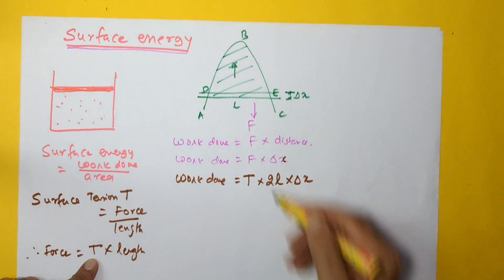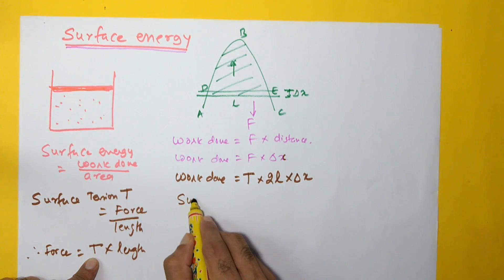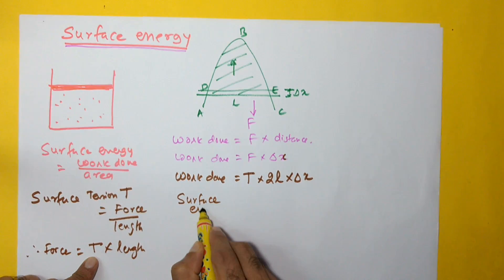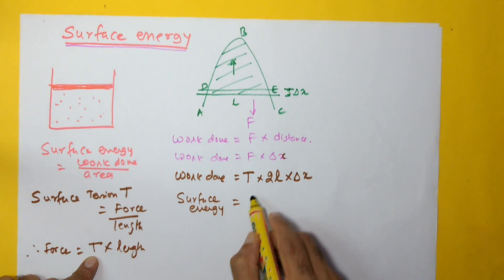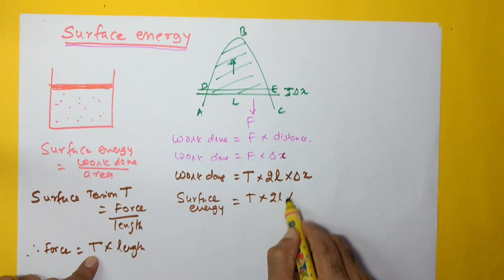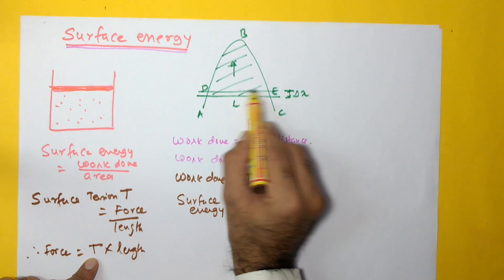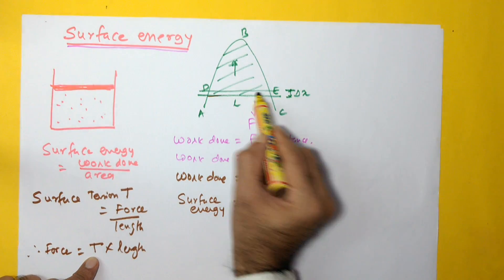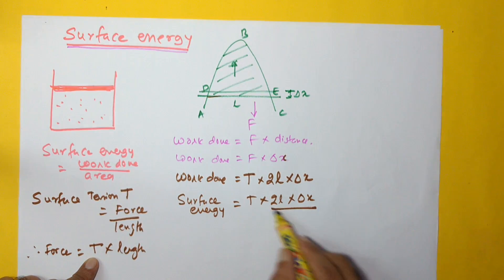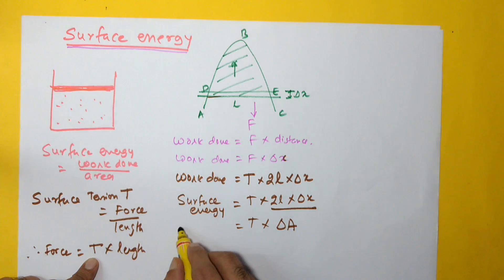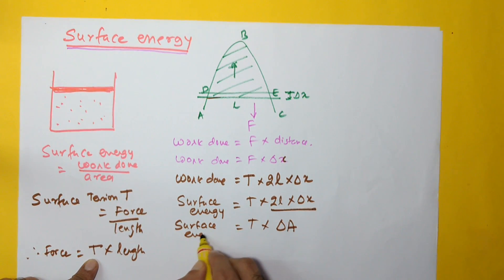And this work done against surface tension is stored in the form of energy. So this surface energy is equal to T into 2L into delta x. Now 2L into delta x—2L is the length and delta x is this—so this is giving me change in area. I can write this as delta capital A, change in area. And this surface energy is equal to T into delta area.